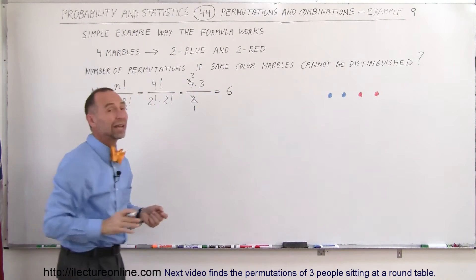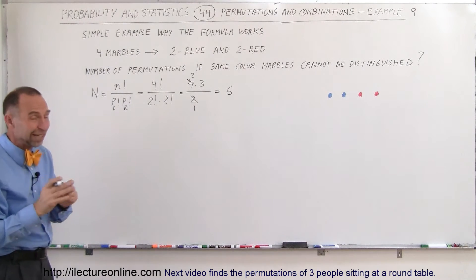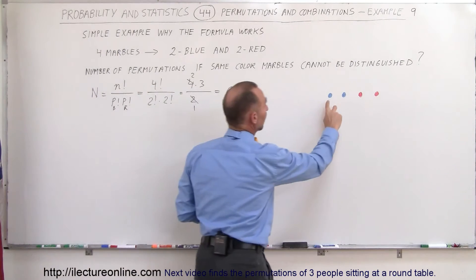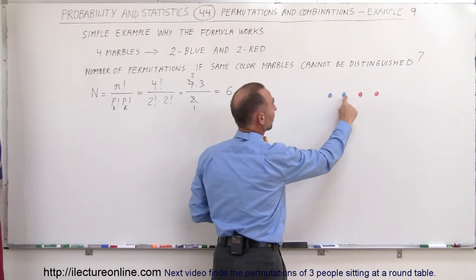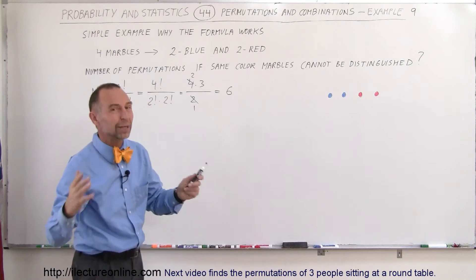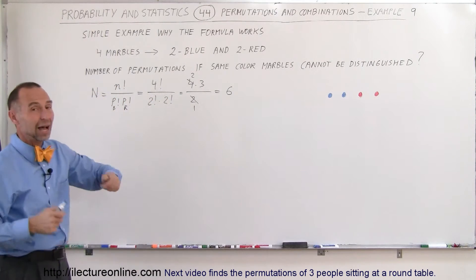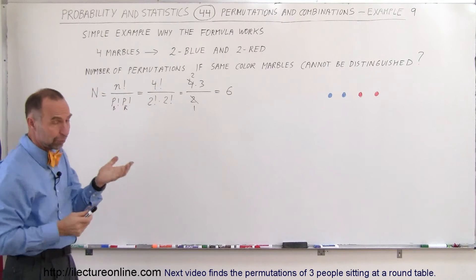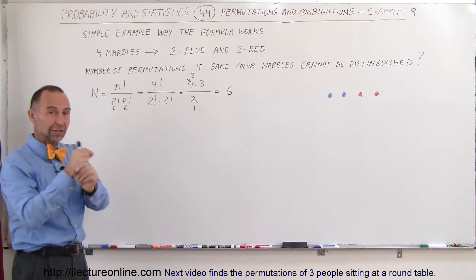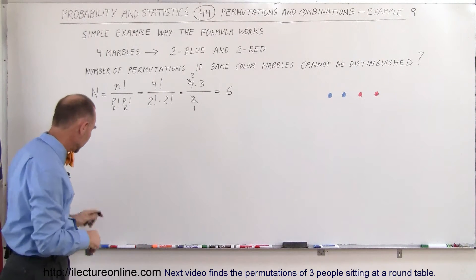There are six different ways in which we should be able to rearrange those four marbles if we cannot distinguish between the colors. For example, we can take this blue, put it over there, take the other blue and put it over there, and we'd have the exact same permutation if we cannot distinguish the colors. So let's see how many ways we can rearrange those four marbles — changing the same color into the same positions doesn't give you any more permutations.